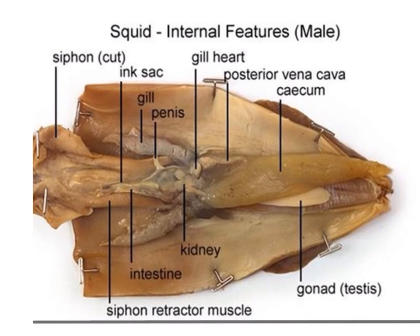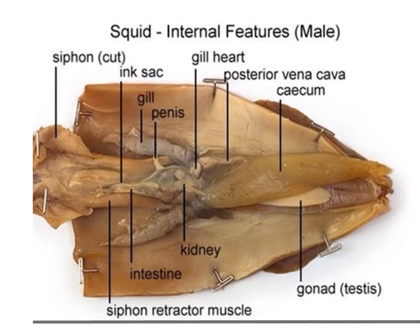During mating, the male transfers a sperm packet called the spermatophore — produced by the testes — to the female mantle using the left fourth arm in a maneuver known as hectocotylization. This hectocotylized arm is specialized for this specific reproductive function. Comparing male and female arms, the male's arms are shorter and thicker, while the female's arms are much thinner and longer.